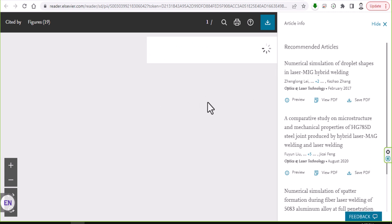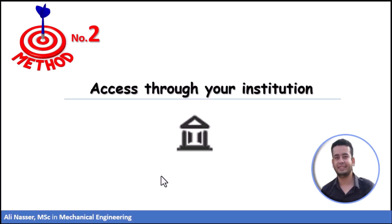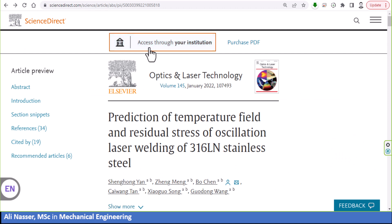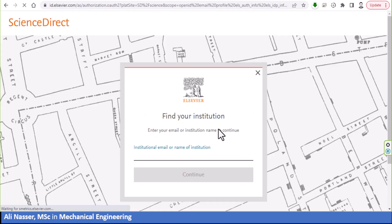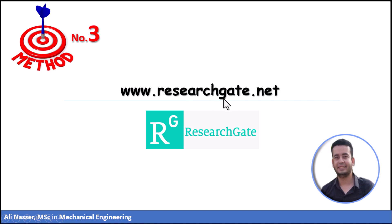That's the first method. For method number two, it depends on your institute. If your institute collaborates with a journal and you have an educational email, you can easily get your article for free. For example, if I look for this article, I'll go to the journal — here is the article — just click on 'Access through your institution' and type your email. Make sure your institution collaborates with that journal.